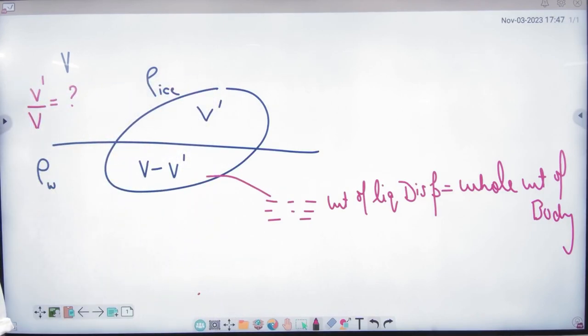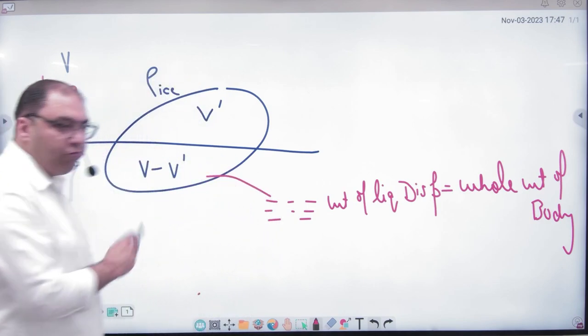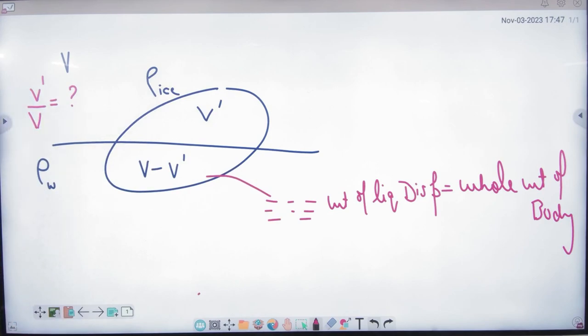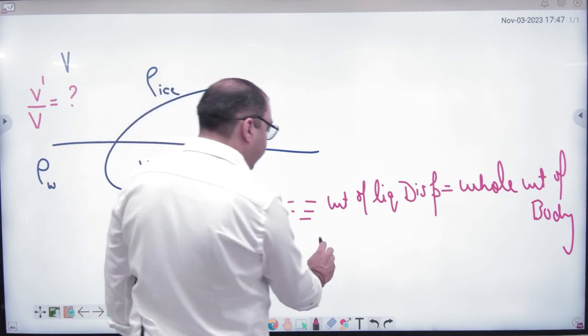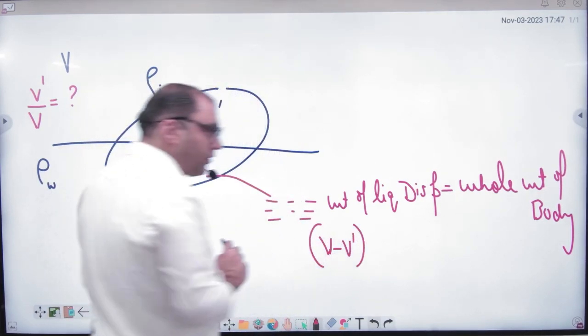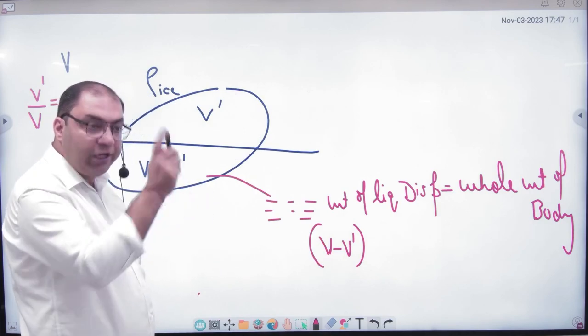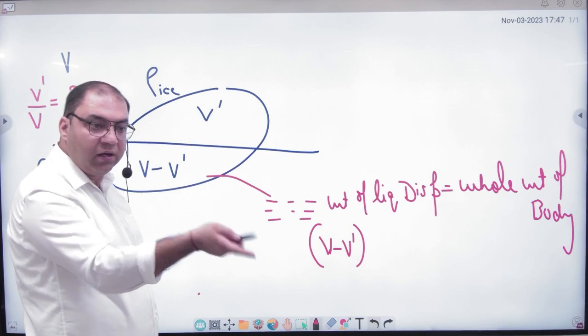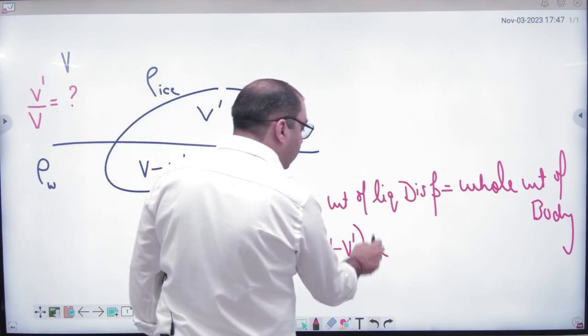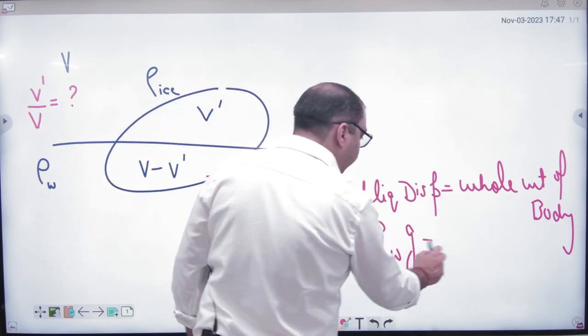Now we have put values here. Weight of liquid displaced, what will happen? Volume of liquid displaced, V minus V' volume of liquid displaced into density of water. Weight is coming out of liquid. So what is density? Liquid. So what does liquid mean here? Water into G.